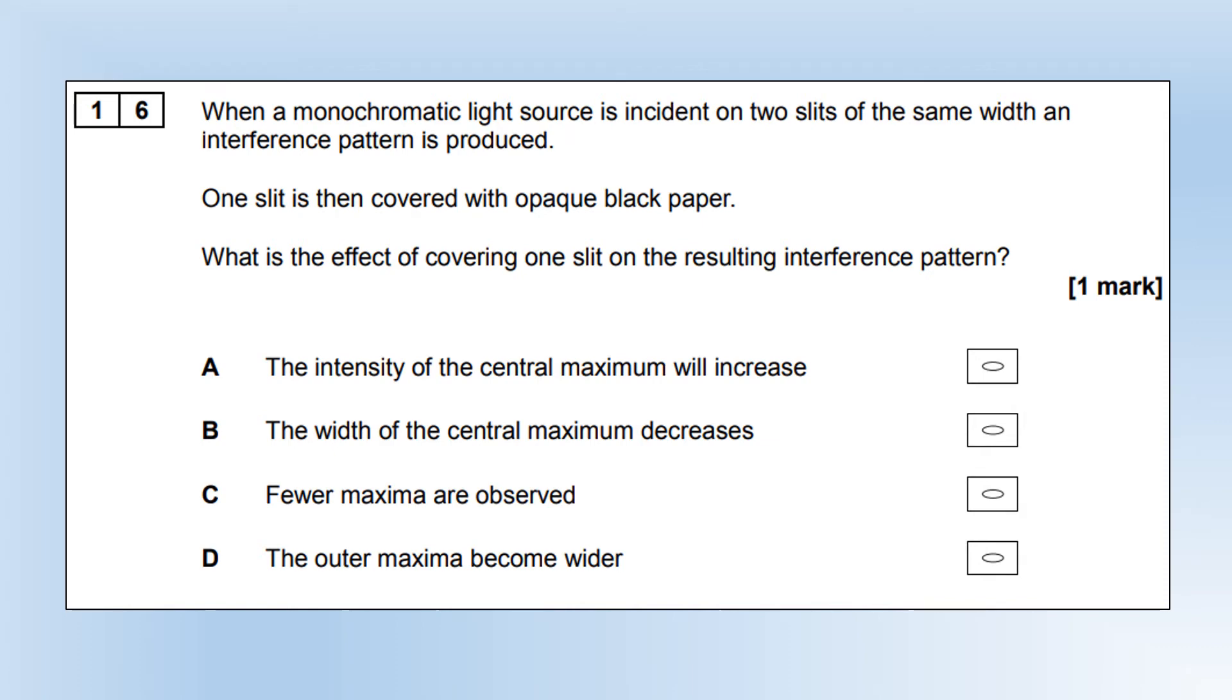When monochromatic light sources incident on two slits of the same width, an interference pattern is produced. One slit is then covered with opaque black paper. What is the effect of covering one slit on the resulting interference pattern? The answer is C. We're going to see fewer maxima. When you have a single slit, you get a double width central fringe, a much wider central fringe.